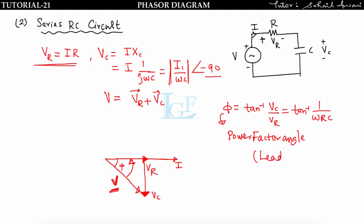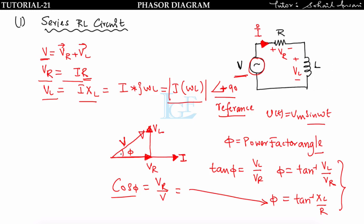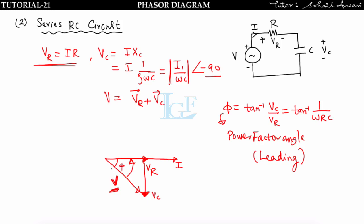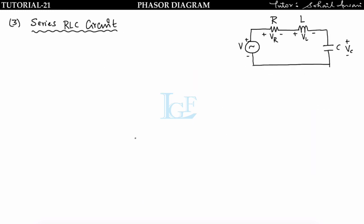In the RL circuit, voltage leads current (lagging power factor). In the RC circuit, current leads net voltage (leading power factor). Now for the series RLC circuit: by KVL, V = Vr + Vl + Vc, where Vl = I·XL at +90° and Vc = I·Xc at −90°.